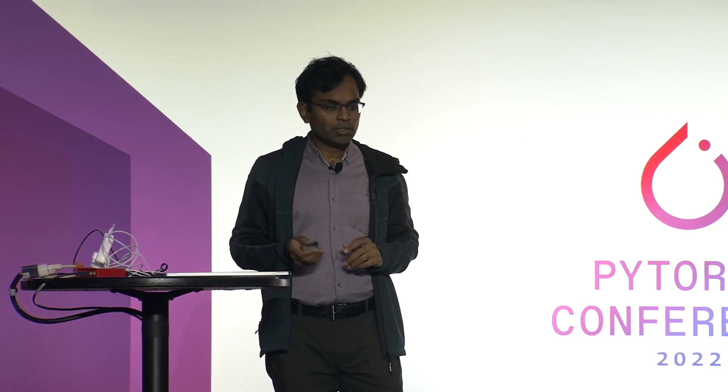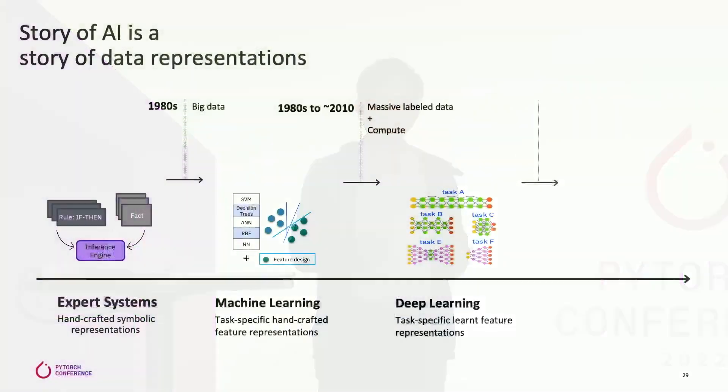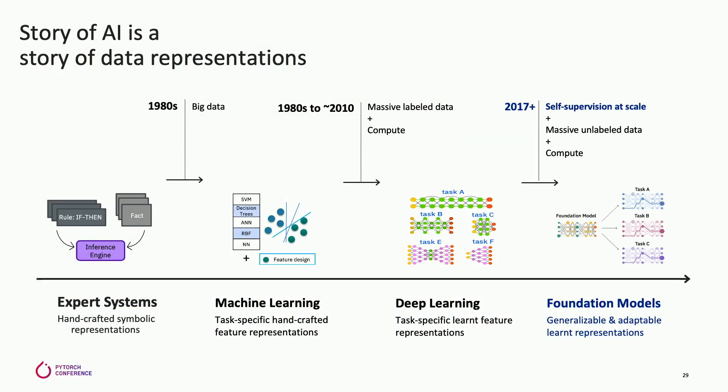I think everybody has heard about it in the NLP domain. It's a short story basically saying that in the 1980s you had your expert systems, then you moved to machine learning — SVMs and whatnot. You had deep learning starting in 2010s up until 2017-2018, and that evolved into what we are calling foundation models. Basically, it's deep learning but on steroids in some ways.